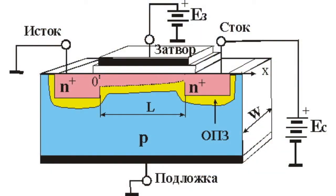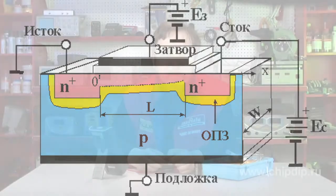In the insulated gate field effect transistors, the metallic gate is separated from the semiconductor channel with a thin layer of dielectric. These devices are also often referred to as MDS or MOS transistors, which stands for metal oxide semiconductor. The base of such devices is a silicon plate with P-type electroconductivity, which has two N-type electroconductivity areas with increased conductivity. These areas are the inlet and the outlet. There is a thin near-surface channel with N-type electroconductivity between the inlet and the outlet.